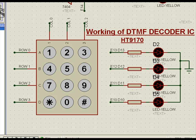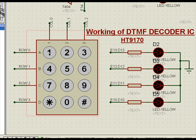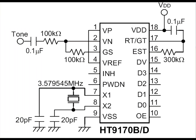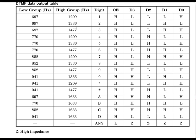If we look at the simulation, the working of a DTMF decoder IC is that when a number is pressed, it gives something similar to a binary code, as per the table that we see in the manufacturer's data sheet. For example, DTMF means dual tone — this is one frequency, and this is another frequency for digit 1.